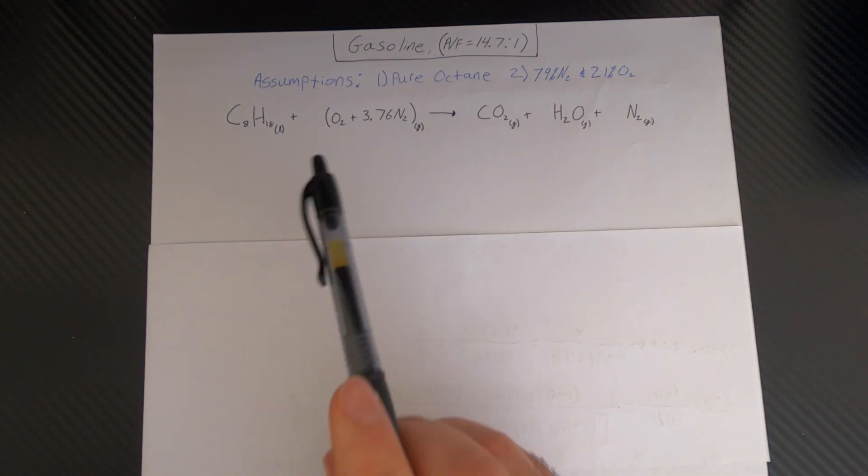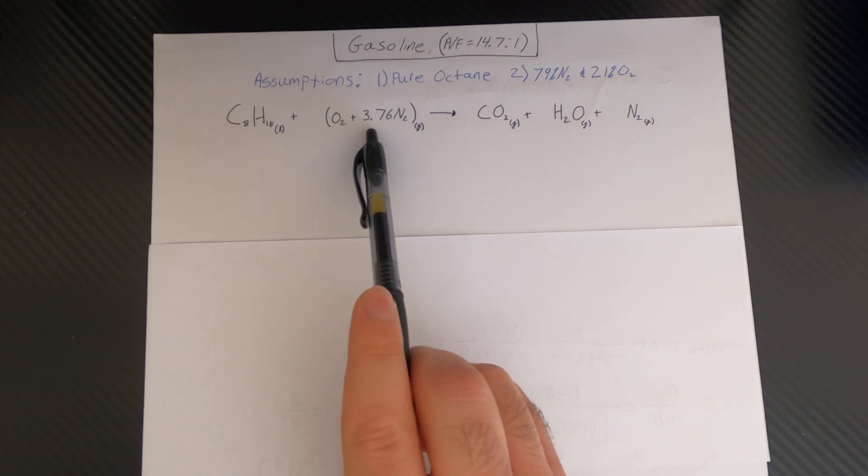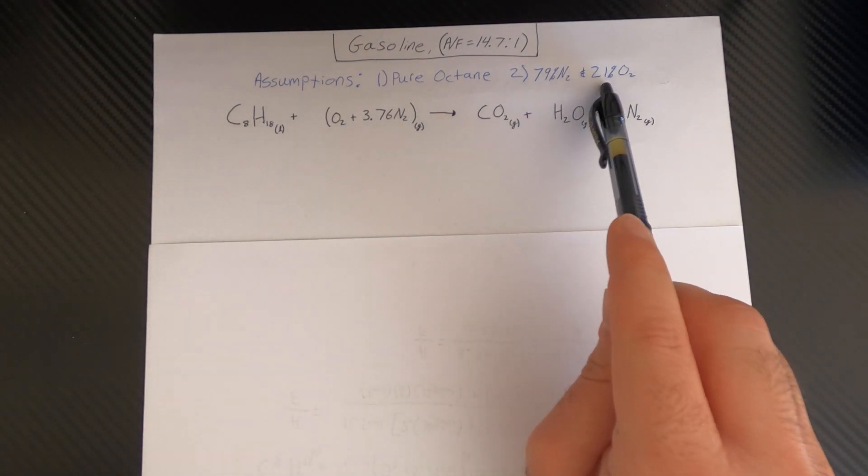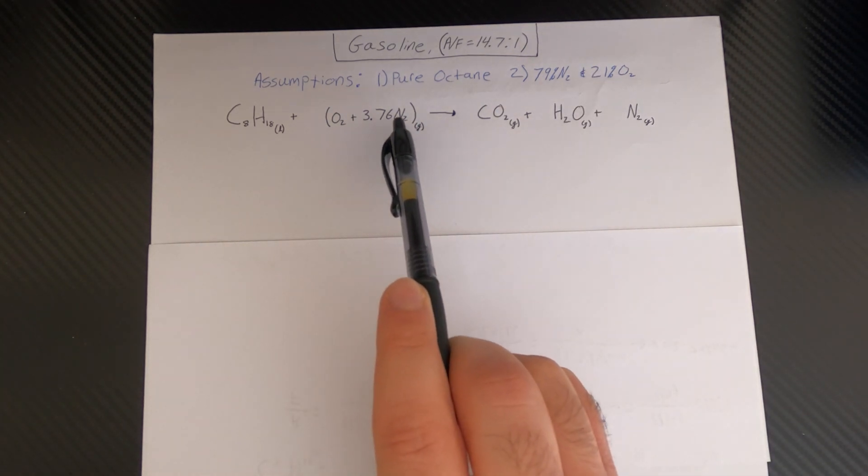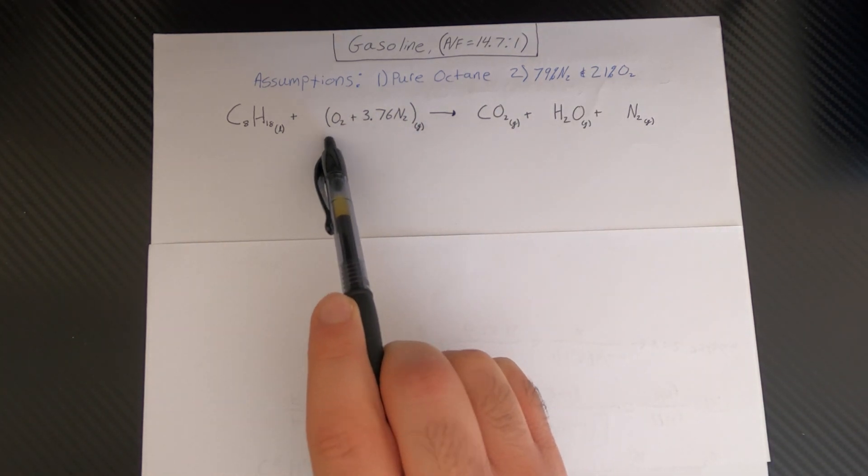Which is shown here, and if you're curious where this 3.76 comes from, that's 79 divided by 21. So this is saying that you have 3.76 parts nitrogen and one part oxygen.